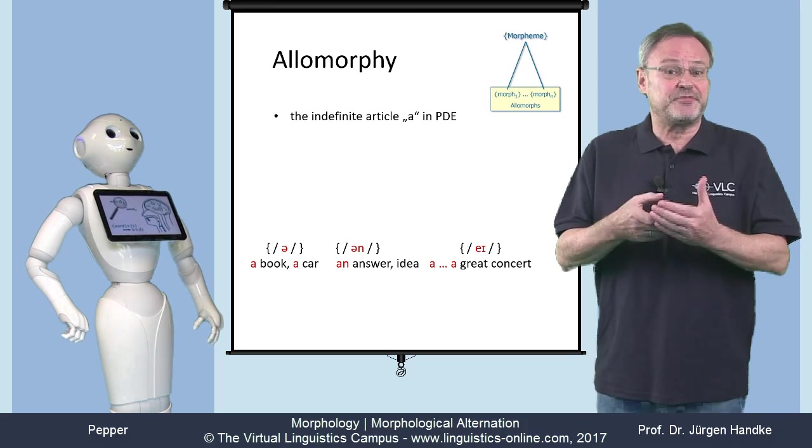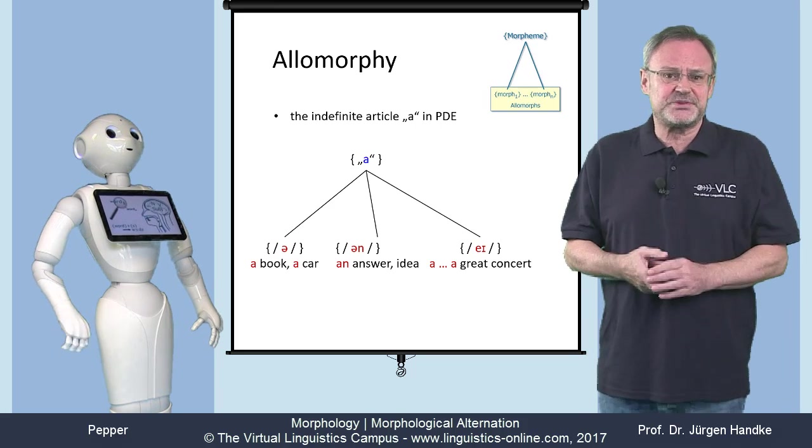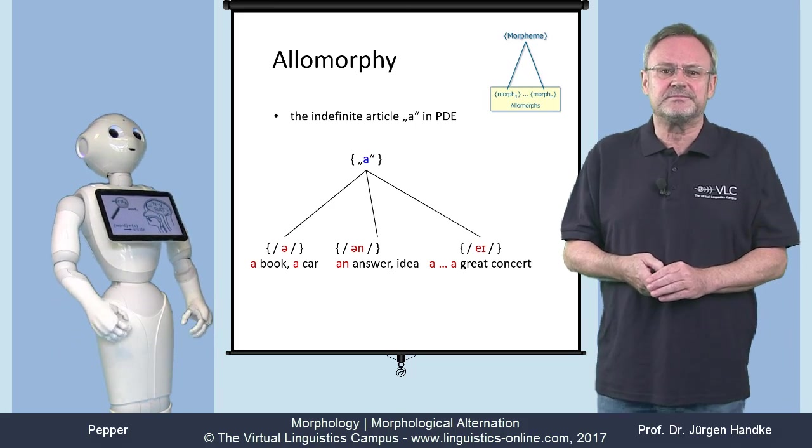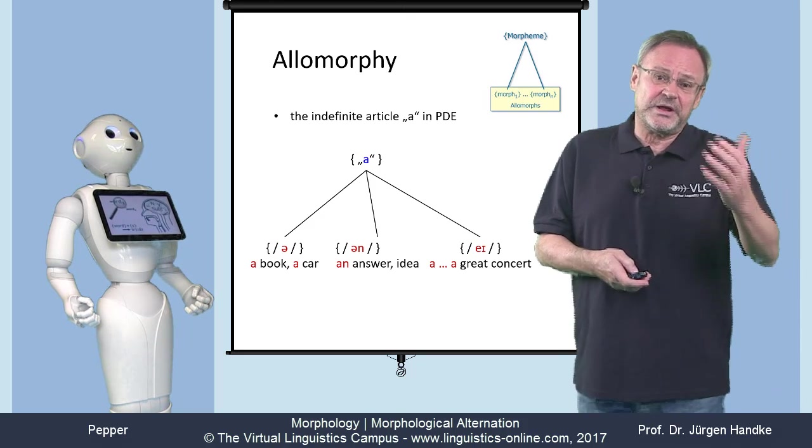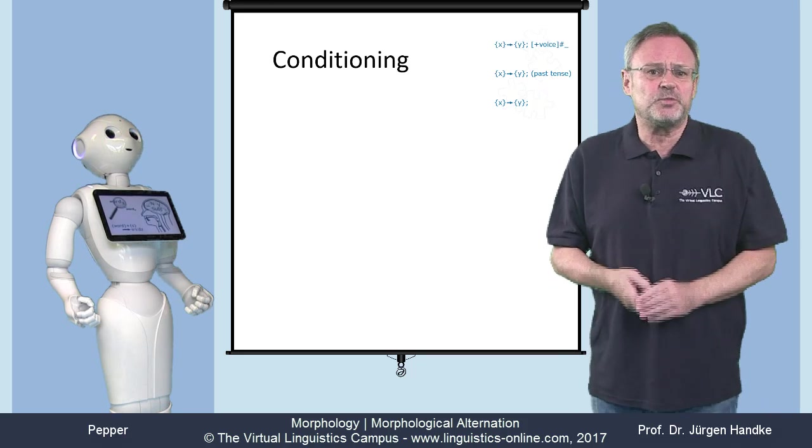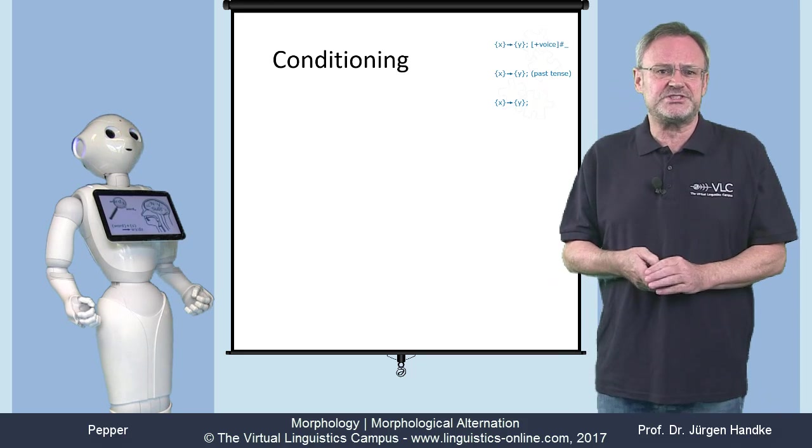Yes, in other words, we have three allomorphs that represent the morpheme 'a'. But how do we know when to use which allomorph? Well, we can define three conditions under which a particular allomorph is selected.